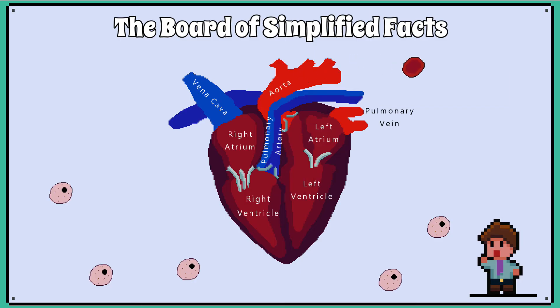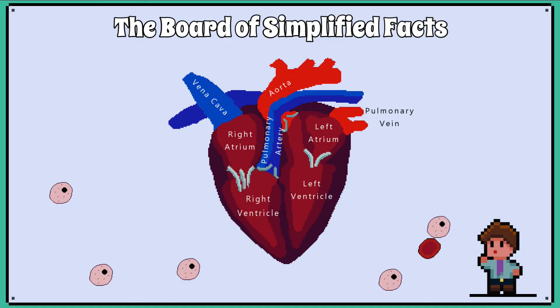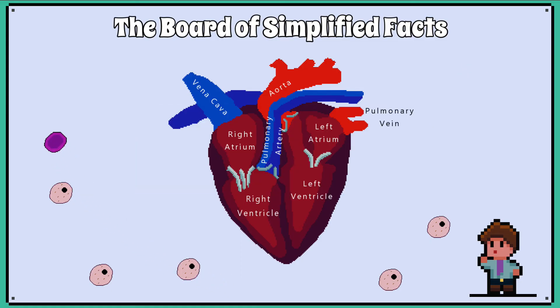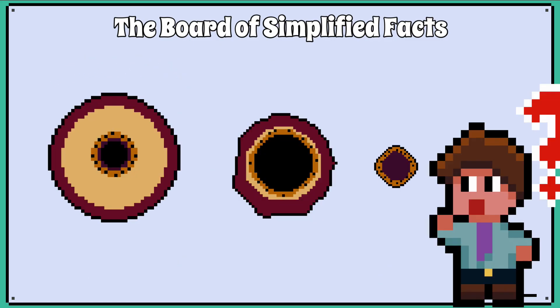The red blood cell will now deliver the oxygen to the organs and cells and finally return to the vena cava. The systemic circuit is now complete, and we can also say the red blood cell has completed its journey of the double circulatory system of the body. In the next lesson we will look at arteries, veins, and capillaries in more detail.